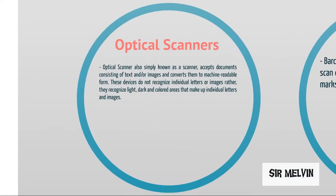There are several types of scanners. Number one is the optical scanner, also simply known as a scanner. Optical scanners accept documents consisting of text or images and convert them to machine-readable form. These devices do not recognize individual letters or images; rather, they recognize light, dark, and colored areas that make up individual letters and images.